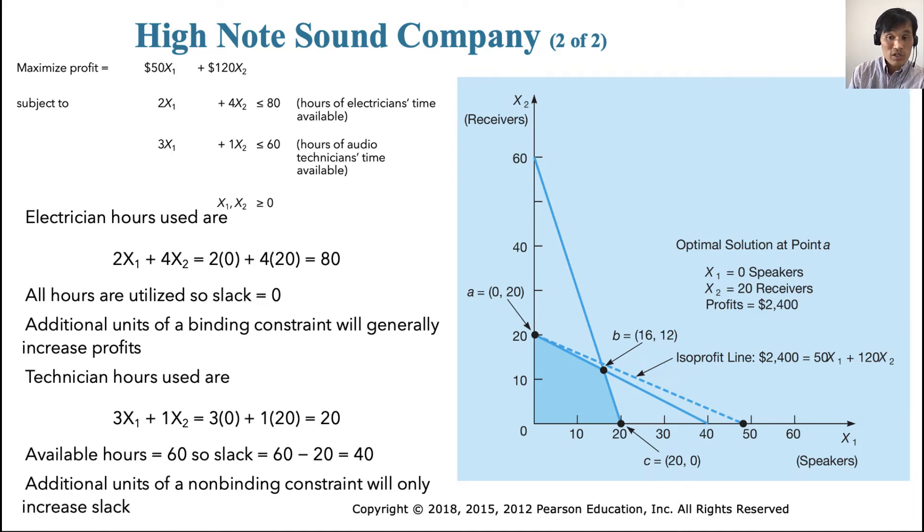Additional units of a binding constraint will generally increase profits. How about technician's constraint? Look at this constraint for technician. If you plug these numbers in there, then you find that this is 20. In other words, you are spending only 20 technicians time out of 60 that you allowed for. So there are slacks in these constraints given this solution. Since the allotted budget is 60 hours of technician time, there are 40 hours of slack for this optimization. Additional units of a non-binding constraint will only increase slack. Although you add more to this constraint, it's going to only increase the slacks, so it's not that helpful.